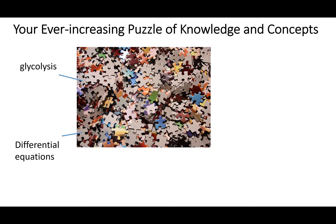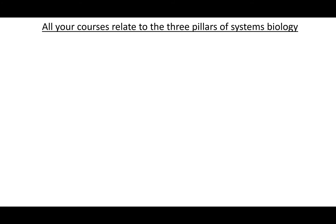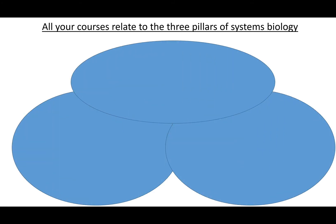In your head it might sometimes feel like you have glycolysis lying somewhere, differential equations lying somewhere, knowledge about algebra or cell biology lying in different places — just a big mishmash of knowledge that is not structured or made into beautiful constructions. The question is: can you see a red thread through all of these different things? My argument is that systems biology is that red thread. It rests on three pillars — the first pillar is biology and medicine.